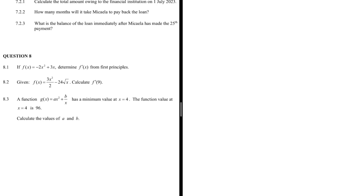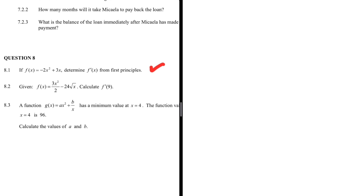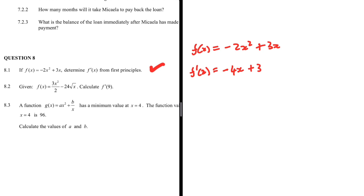Question 8.1: we are finding f prime of x from first principles, where f(x) = -2x² + 3x. If we use the power rule to find f prime of x, we get -4x + 3. That should be easy to see. So when we use first principles, f prime of x should give the same result — that is our expected final answer.